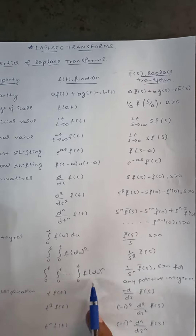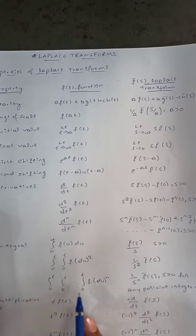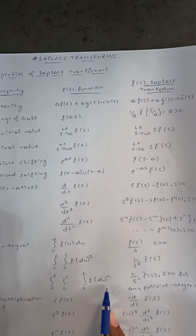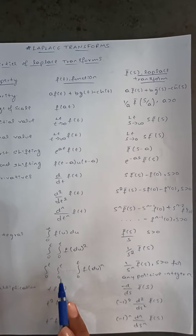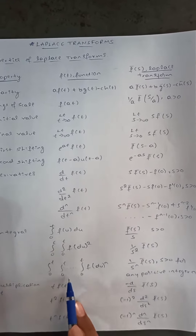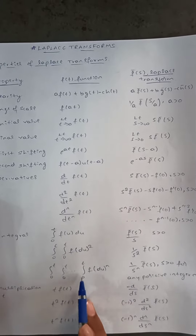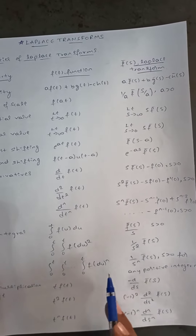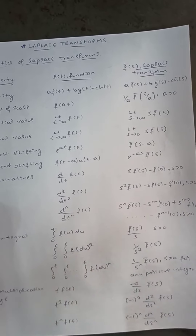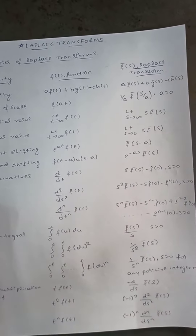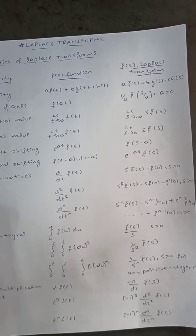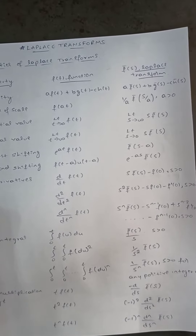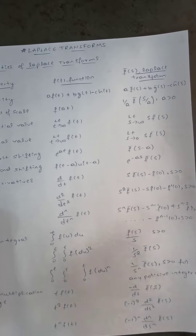This extends to n-fold integration: n repeated integrations from 0 to t equals (1/s^n)·f̄(s), where s is greater than zero, for any positive integer n.